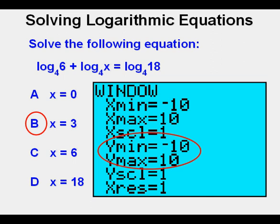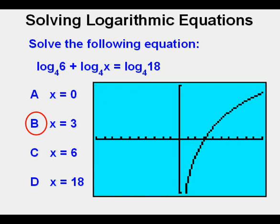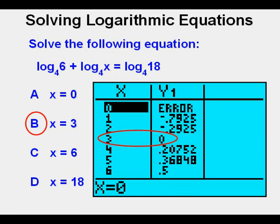Note that the y min is negative 10 and the y max is 10. We're going to change the y min to negative 1 and the y max to 1 to get a lot better look at what's happening on the x axis. Now press graph. Now we get a real good look at the curve crossing the x axis at x equals 3. And we can also check the table view and see that at an input value of 3 the output is 0 again demonstrating that B is the correct answer.